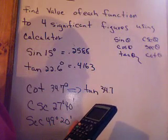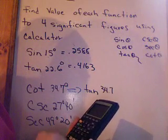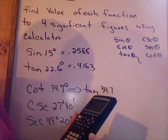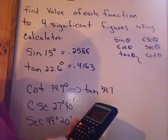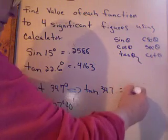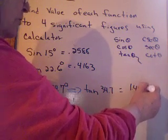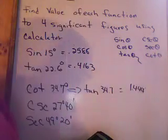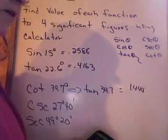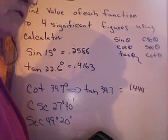So second answer, x^-1, and I flip it over. And that gives me 1.444. We want four significant digits. So there I go. 1.444.